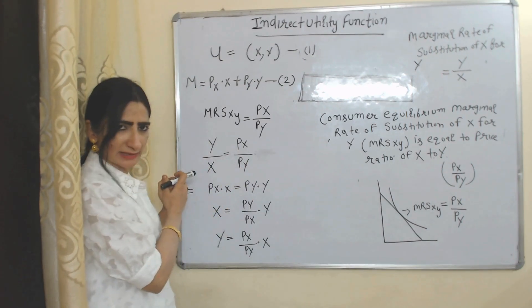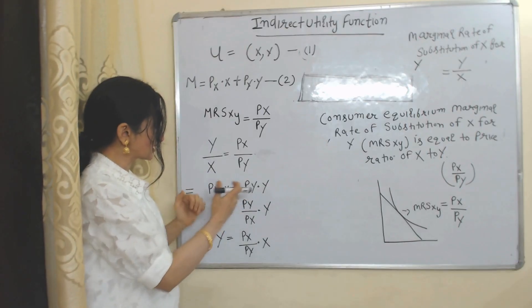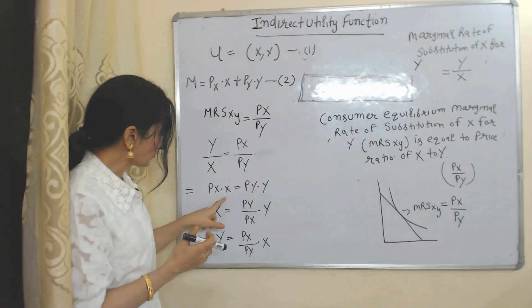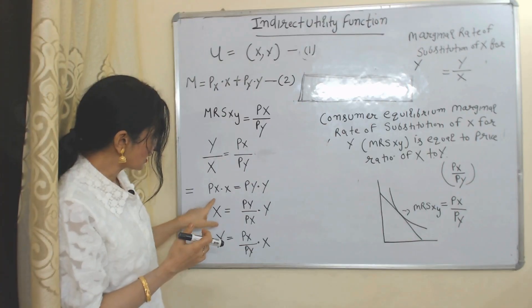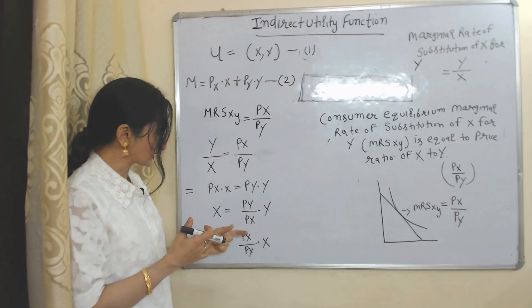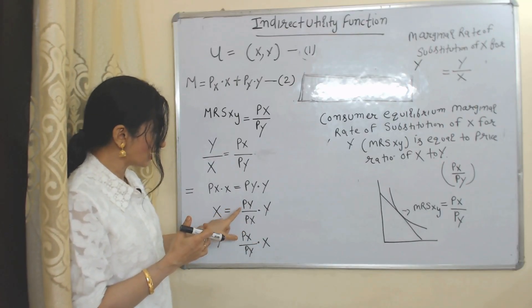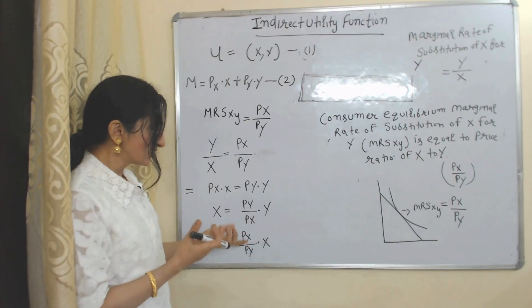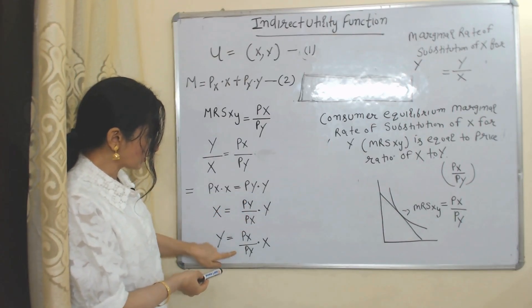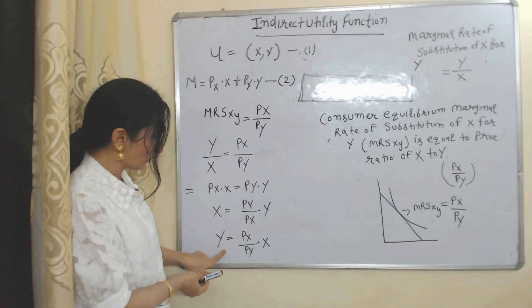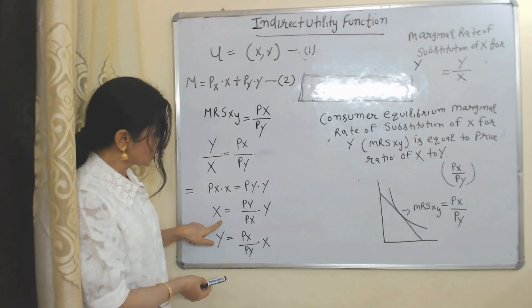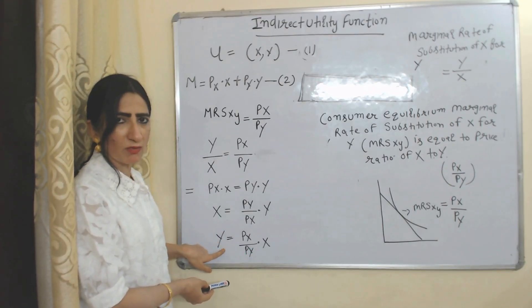Now we cross-multiply this equation. After cross-multiplying, the equation looks like this. We will find the value of X — this PX comes below, giving us X equal to PY over PX into Y. Same way, we find the value of Y — this PY comes below, giving Y equal to PX over PY into X. So this is the value of X and this is the value of Y.